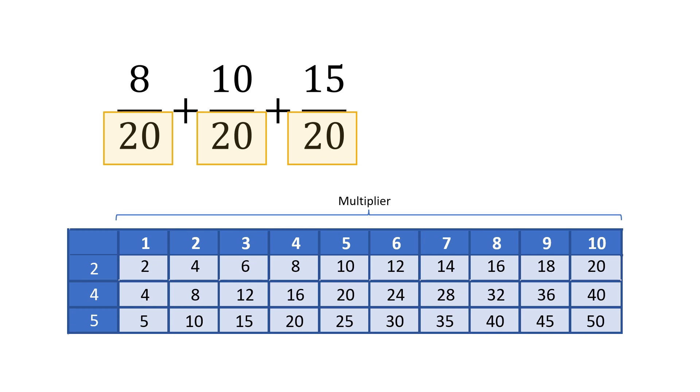8 plus 10 plus 15 is 33. 33 over 20 is an improper fraction and we have to rewrite it as a mixed number. So the final answer is 1 and 13 twentieths.